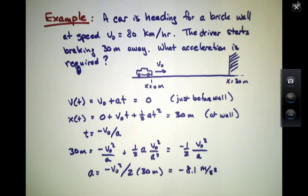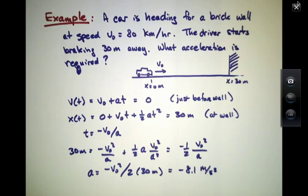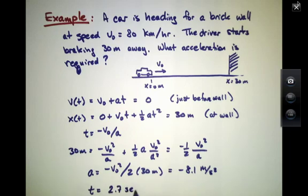Notice that's almost one G. A G is about 9.8 meters per second squared, meaning you have to hit the brakes so hard it approaches gravitational acceleration. And for those curious, the time it takes to stop works out to be about 2.7 seconds.